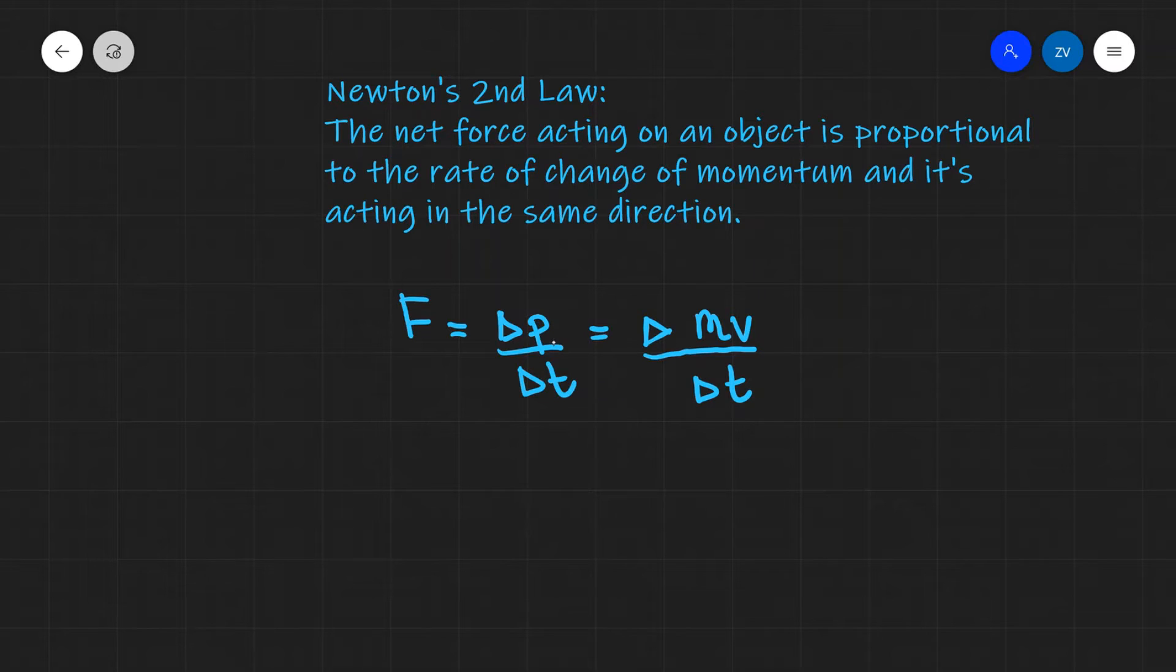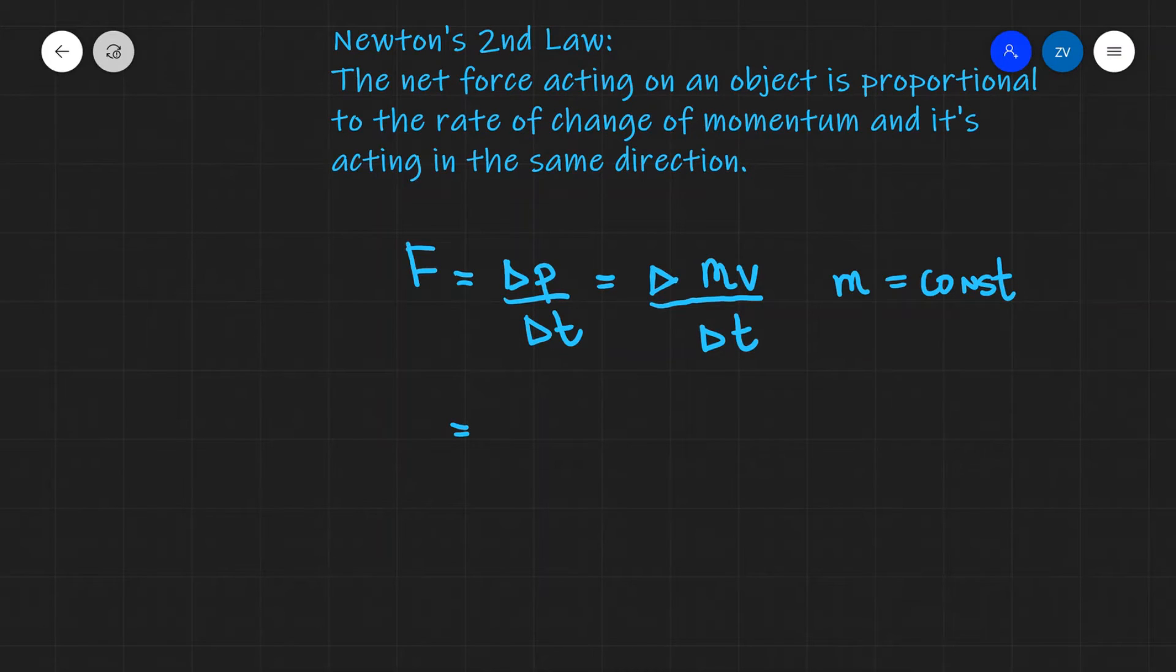Now if we suppose that m is equal to a constant, so the mass in your system is equal to a constant, which is quite a lot of situations really, then what we can do is take this m outside of the rate of change and what we get is that the net force F is going to equal m times the rate of change of velocity, which is actually the acceleration.